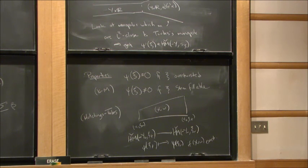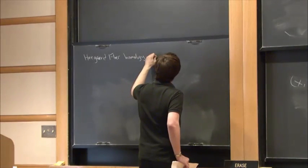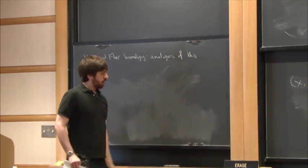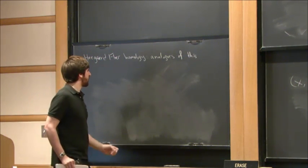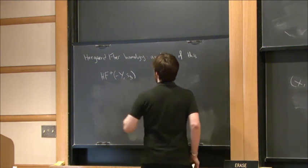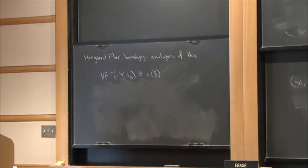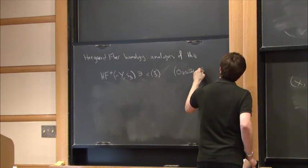That's for closed three-manifolds. At the same time, in Heegaard Floer homology — now known to be isomorphic to monopole Floer homology — there are analogs of all this, due to Ozsváth and Szabó. They're not defined using monopoles or holomorphic curves, but more combinatorially using the Giroux correspondence between open books and contact structures. The group HF-plus of minus-Y also has a contact class, and the isomorphism from Heegaard Floer to monopole Floer identifies these two contact classes.